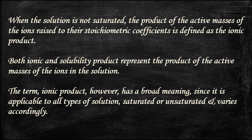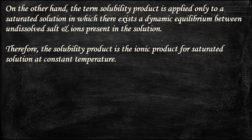When the solution is not saturated, the product of the active masses of the ions raised to their stoichiometric coefficients is defined as the ionic product. Both ionic and solubility products represent the product of the active masses of the ions in solution. The ionic product has a broader meaning since it is applicable to all types of solutions — saturated or unsaturated — and varies accordingly. The solubility product applies only to a saturated solution in which there exists a dynamic equilibrium between undissolved salt and ions in solution. Therefore, the solubility product is the ionic product for a saturated solution at constant temperature.